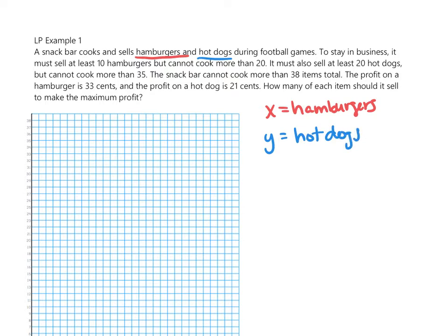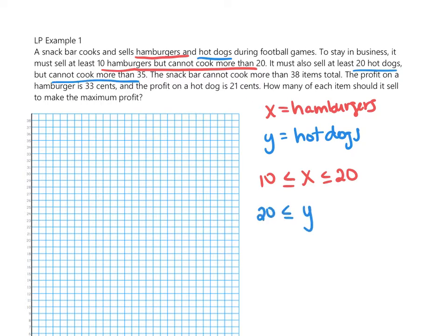It says they must sell at least 10 hamburgers but cannot cook more than 20, so the constraint is that X is between 10 and 20: greater than or equal to 10 and less than or equal to 20. It must also sell at least 20 hot dogs but cannot cook more than 35, so Y has to be between 20 and 35.